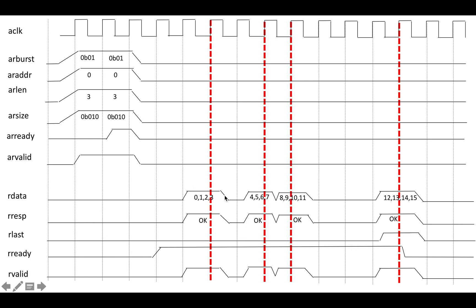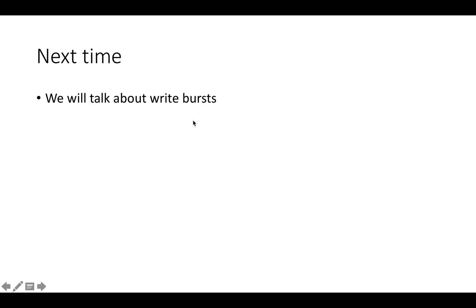Looking at this channel, there are four critical clock edges where R valid and R ready are both high — these are the edges where the transfer handshake takes place for each of the four transfers. That's basically how AXI read bursts work. Hopefully this timing diagram helps, and in the next video we'll start talking about the write channels and write bursts, which are very similar to read bursts but involve putting data in and receiving responses for write successes.